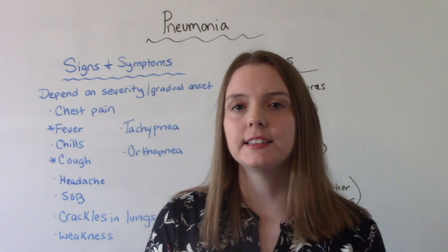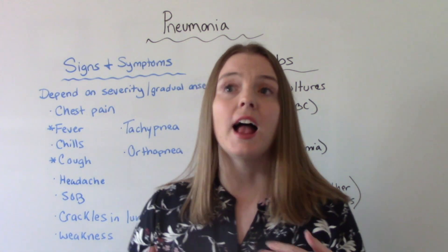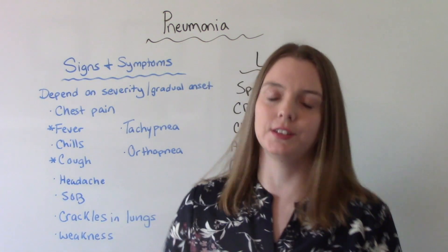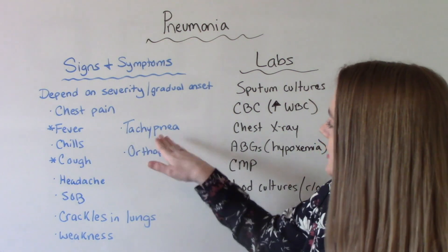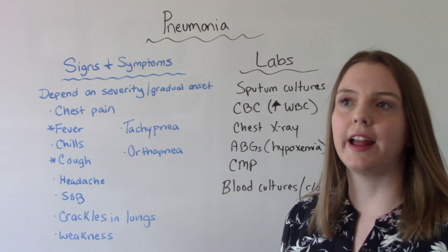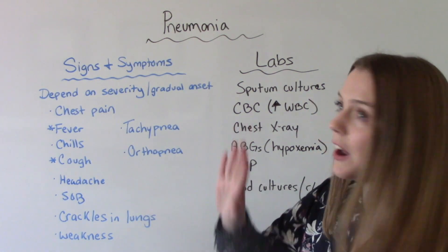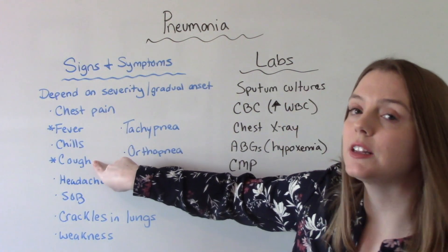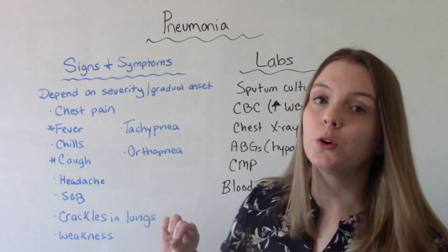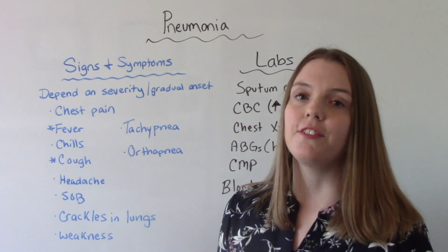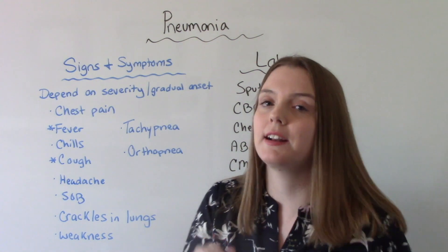When it comes to signs and symptoms, they're going to depend on the severity of the pneumonia — mild versus more severe — and typically they come on gradually. Some symptoms include chest pain, tachypnea (a high respiratory rate), orthopnea (shortness of breath while lying supine), fever, chills, and cough. Fever and cough differ depending on the cause: if it's viral, they'll have a low-grade fever and a non-productive cough; if it's bacterial, they'll have a high fever and a productive cough.